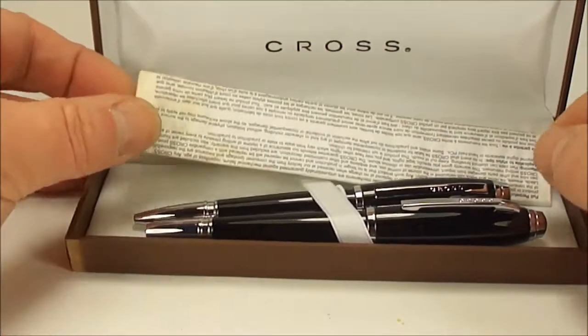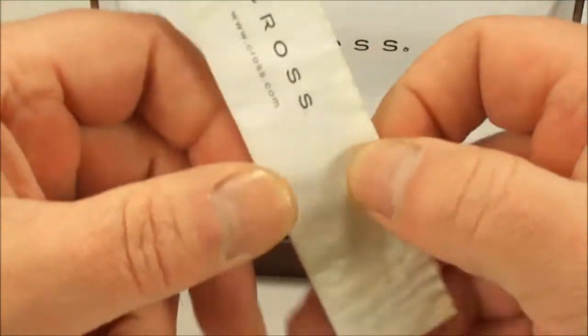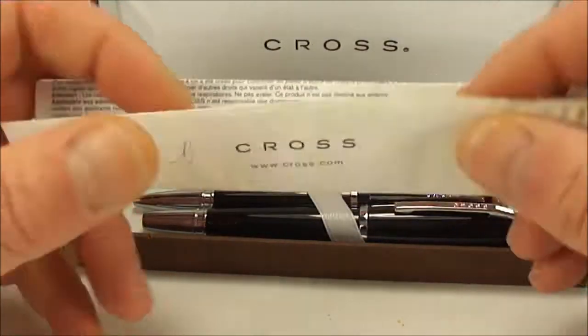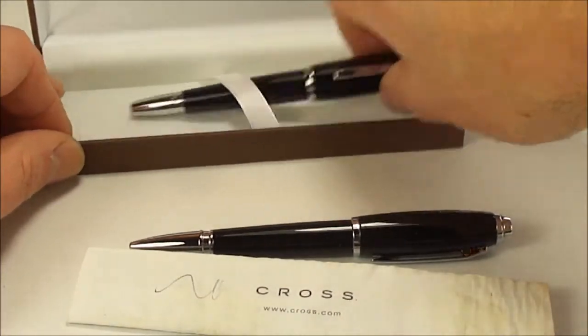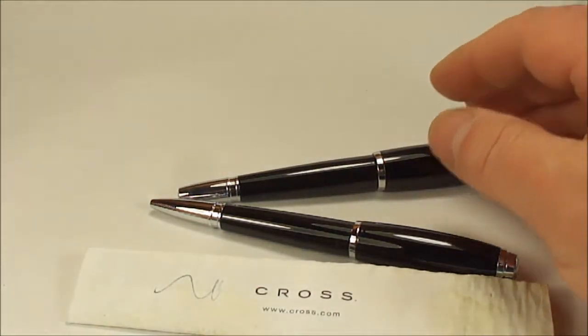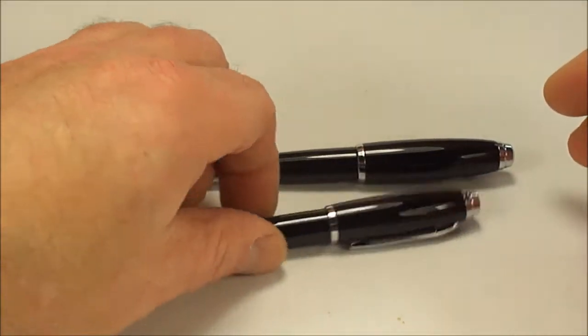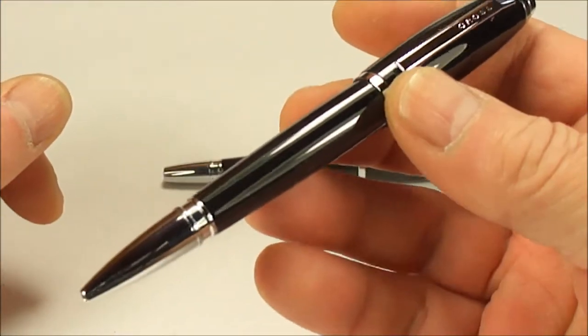Now if we open it up, there we have a Cross fountain pen and a ballpoint set. It comes with the Cross instructions, so we won't go through them. And what we have for you—let's take them out of the case. As you can hear there, it's a spring-loaded case. Let's move the instructions and let's show the ballpoint first of all.